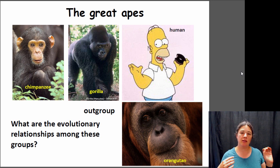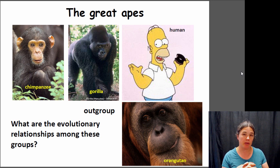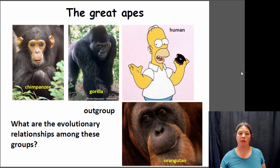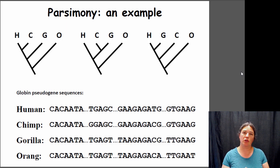If we want to build trees that contain different relationships between chimpanzees, gorillas, and humans, there's only three members in our ingroup. There's actually only three trees you can build. You can either build a tree where humans are most closely related to chimpanzees.